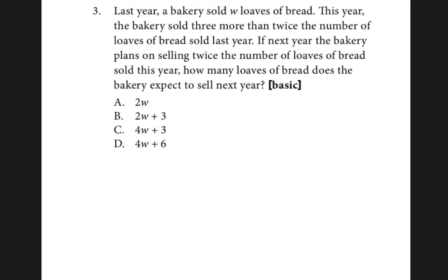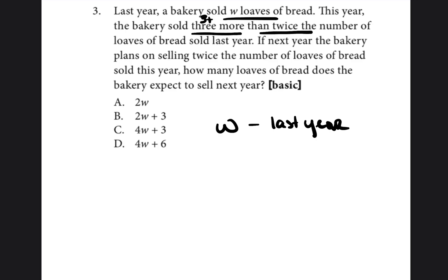Last year, a bakery sold W loaves of bread — so we write that as last year equals W. This year, the bakery sold three more than twice the number of loaves from last year. So twice the number of loaves last year would be 2W.